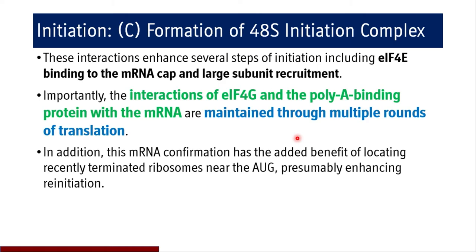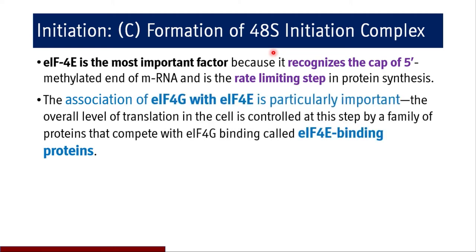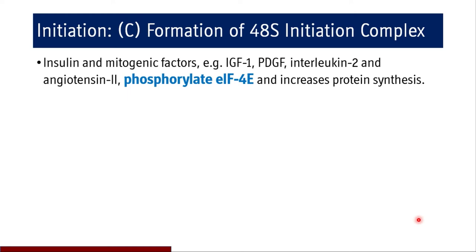EIF4E has the most important role in the 48S initiation complex because it recognizes the cap of the 5' methylated end of mRNA, making it the rate limiting step in protein synthesis. The association of EIF4G with EIF4E is particularly important for circularizing the mRNA molecule. The overall level of translation in the cell is controlled at this step by a family of proteins called EIF4E binding proteins. Factors like insulin, IGF1, PDGF, interleukin 2, and angiotensin 2 phosphorylate EIF4E and increase protein synthesis.